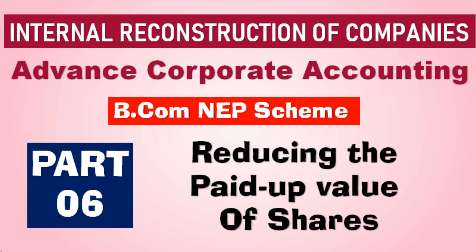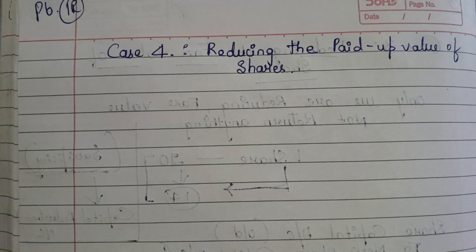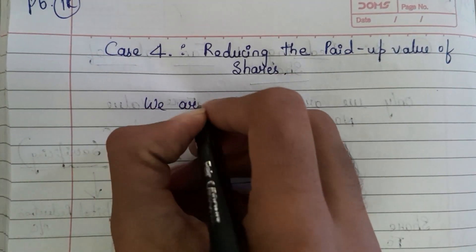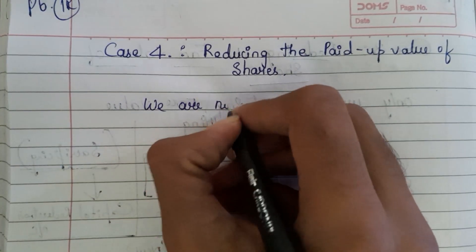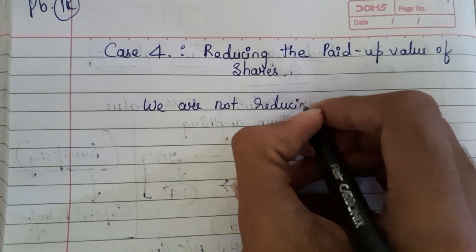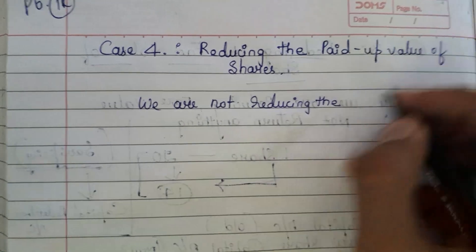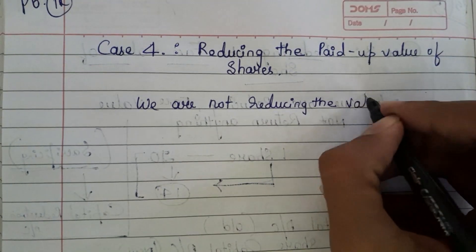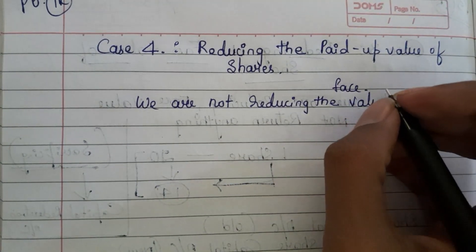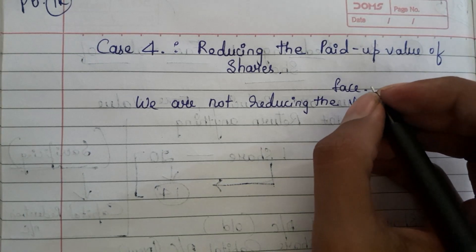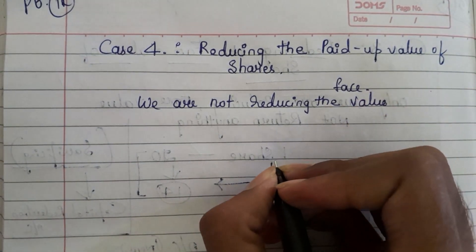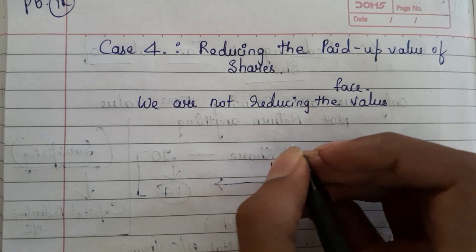Reducing the paid-up value means — see the book here — we are not reducing the face value. Not reducing the face value means there will be no change in the face value of the share. Only there will be a change in the paid-up value.